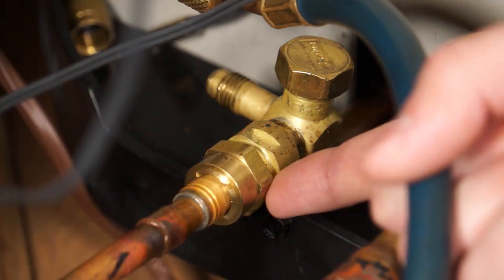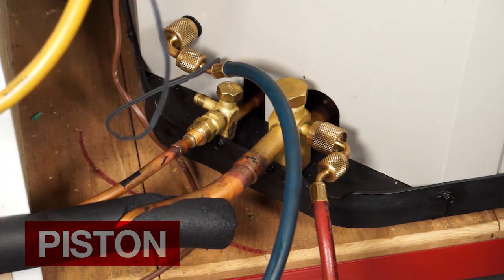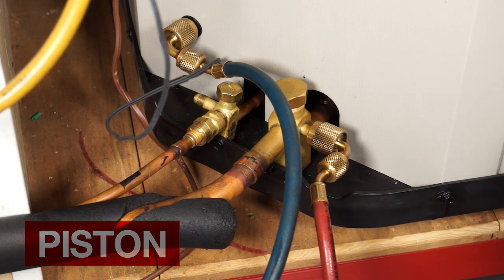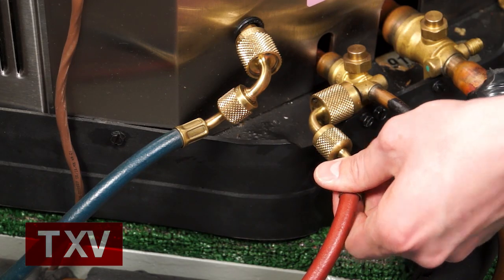Determine if your system has a piston or a TXV, place your blue hose on the common suction port. On a piston system, place your red hose on the large copper line. On a TXV driven system, place your red hose on the liquid line.